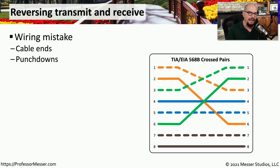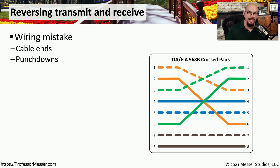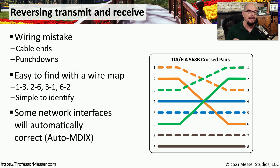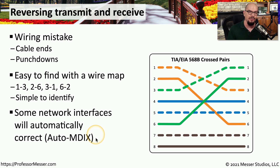Another easy mistake to make is reversing the transmit and receive pairs on your RJ45 connection. This is an example of crossed pairs — pin 1 does not connect to pin 1 and pin 2 does not connect to pin 2, meaning we are crossing some pairs. This may occur in the connectors on the end of the cable, or someone may have punched down the wrong wires into the punchdown block. In some cases, you may not even realize you've reversed transmit and receive because some Ethernet devices will automatically correct this — called auto-MDIX — and the device uncrosses the signal so it works as normal.